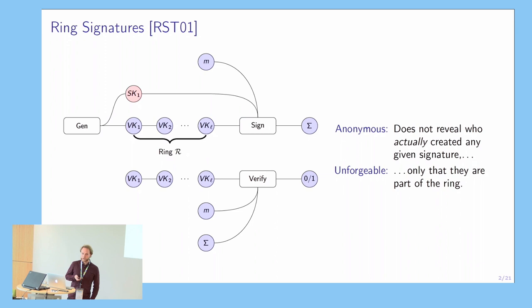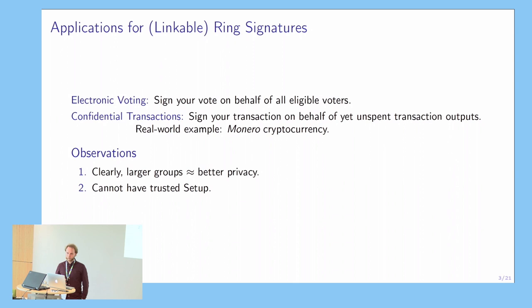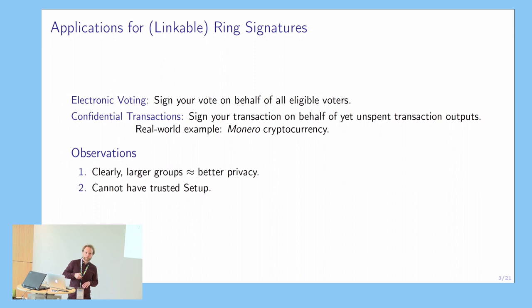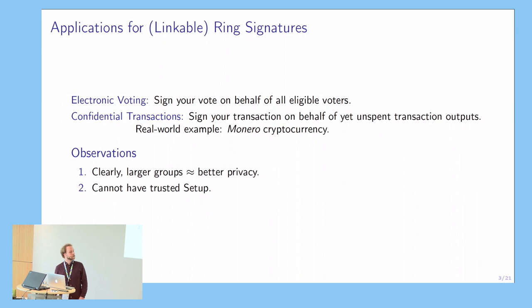Where would you use these kinds of signatures? I have two examples. The first is some form of electronic voting, where you would sign your vote in the name of all eligible voters, and by the anonymity property it would be ensured that no one can tie your vote to your actual identity. The second example is in cryptocurrencies. You can use the ring signature to get some form of sender anonymity for your transactions by signing in the name of a set of unspent transaction outputs. As a real-world example, the Monero cryptocurrency uses ring signatures for exactly this purpose.